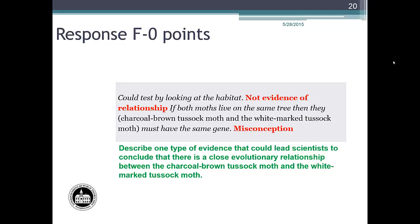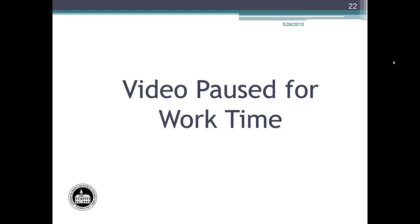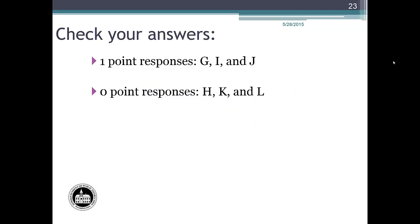At this time, pause the video. Read through the rest of the student responses. Look for a description of the evidence that could lead scientists to conclude that there is a close evolutionary relationship between the charcoal brown tussock moth and the white marked tussock moth. Use the rubric and responses A, B, C, D, E, and F as a guide to assign each sample student response a score. Check your answers, and if you're working in a group, take some time to compare your decisions.